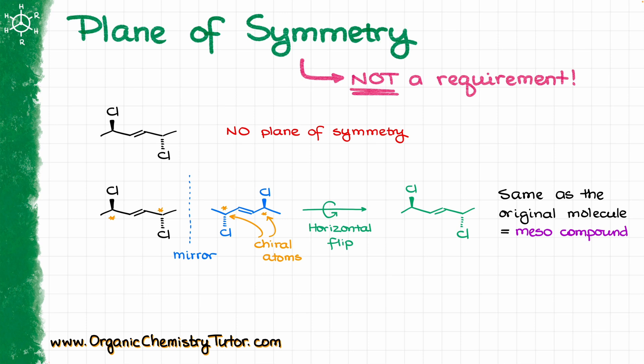So that means that we can potentially have molecules that do not have a plane of symmetry and yet they are meso compounds. There is a definition of a meso compound that you might encounter on the internet and even in some textbooks that states that the meso compound is superimposable with its own mirror image due to the plane of symmetry. This is not correct — this is just plain wrong.